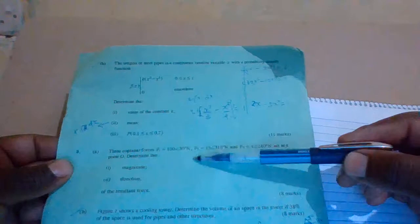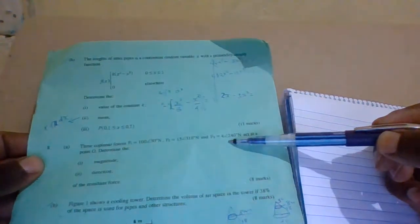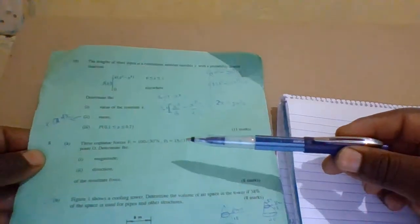Three coplanar forces, F1 equals to this, F2 equals to these newtons, and F3 equals to these newtons, acts at a point. We will determine the magnitude and direction of the resultant force.